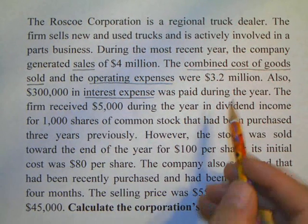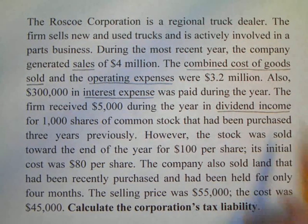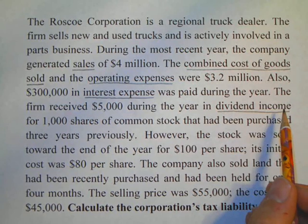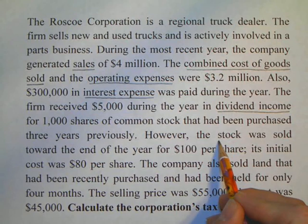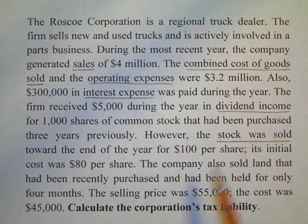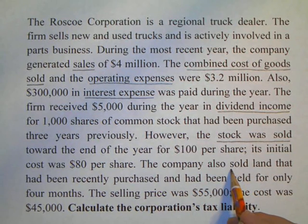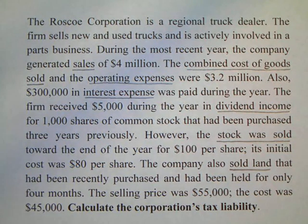Here is another additional source of income — dividend income — which we will be adding, not subtracting. We also had some stock sold, which is a capital gain, and there was also a land sale, which is also a capital gain — in this case a short-term capital gain. Now it's time to prepare the income statement.